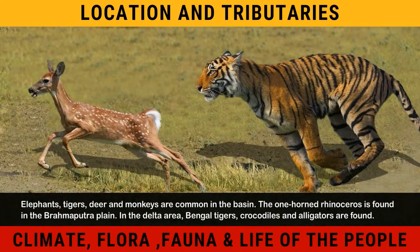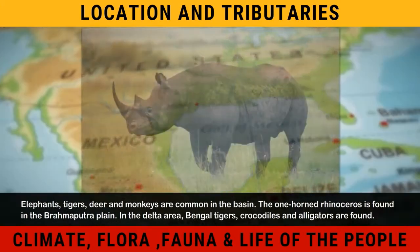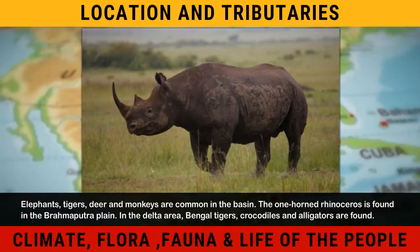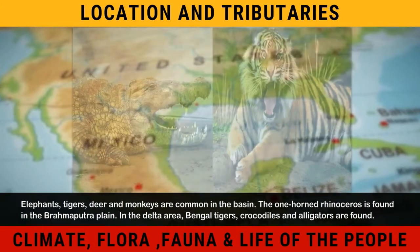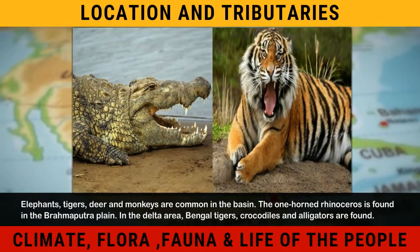Elephants, tigers, deer and monkeys are common in the basin. The one-horned rhinoceros is found in the Brahmaputra Plain. In the delta area, Bengal tigers, crocodiles and alligators are found.